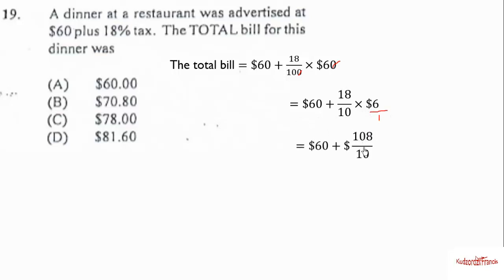The 19th question: A dinner at a restaurant was advertised at $60 plus 18 percent tax. The total bill is $60 plus the tax. The tax rate is 18 percent, so let's multiply 18 percent by 60 and add it to the price of the dinner. That will be 60 plus 18 out of 100 times 6. Multiply 6 by 18 to get 108 out of 100. 108 out of 100 is the same as 10.8. We add 10.8 to 60 to get $70.80.